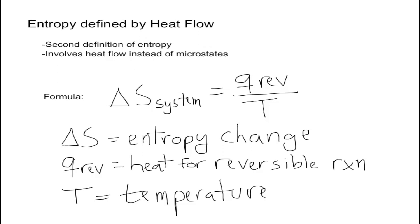This is the formula: ΔS for the system equals Q reversible over T. ΔS is the entropy change, Q reversible is the heat for the reversible reaction, and T is the temperature.